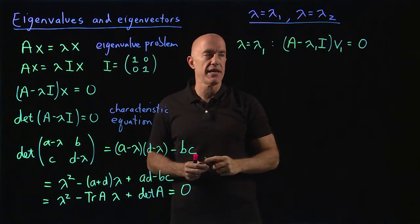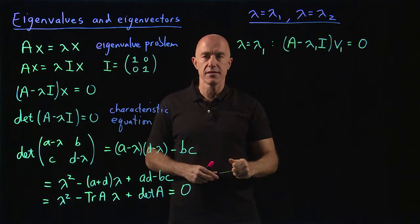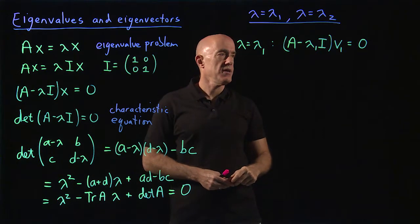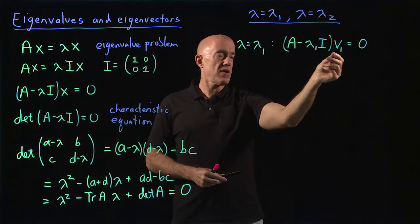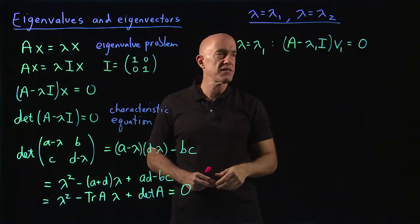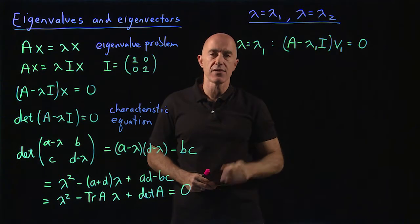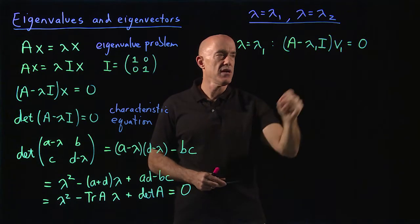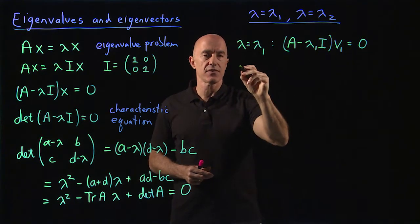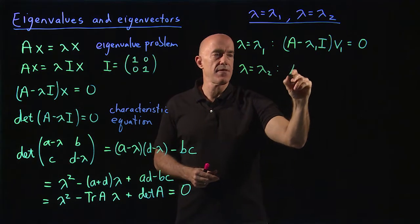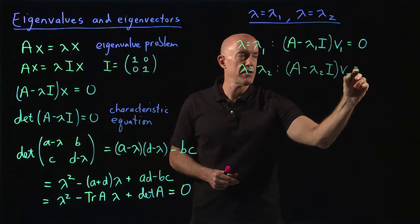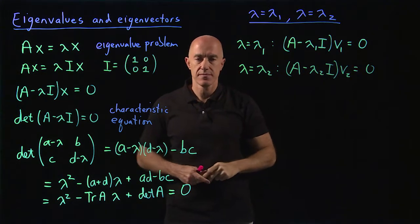You'll need to work some examples to see how this actually works in practice, and there will be plenty of examples in the differential equations course. Note that you can multiply V1 by a constant and still satisfy this equation, so V1 is not uniquely determined — it's only determined up to a multiplicative constant. For the second eigenvector, we solve A minus lambda two I times V2 equals the zero column vector.